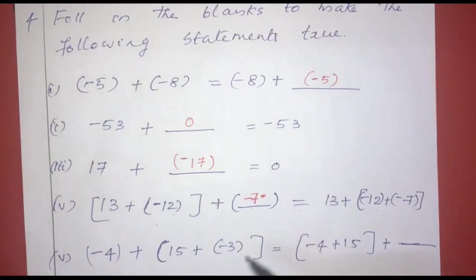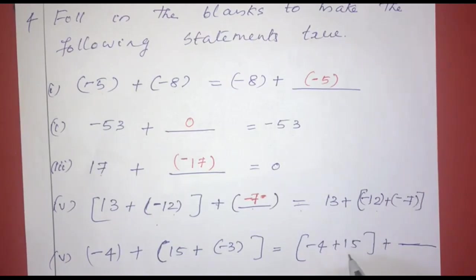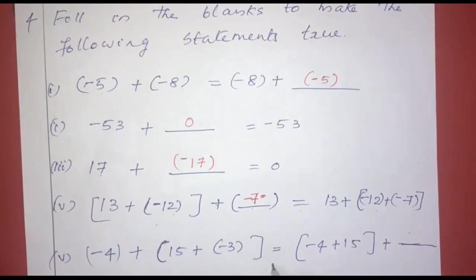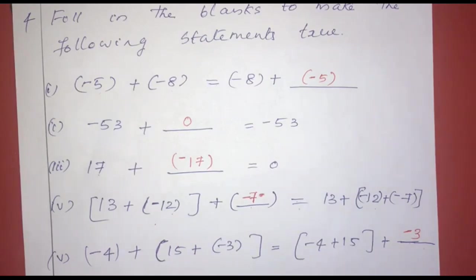Final blank: negative 4 plus 15 plus negative 3 equals negative 4 plus (15 plus dash). By associative property, the answer is negative 3. Now we have completed the questions in exercise 1.2.